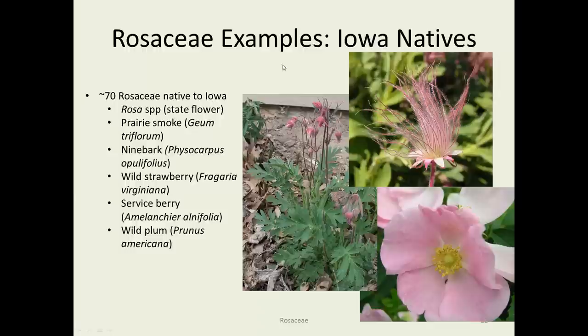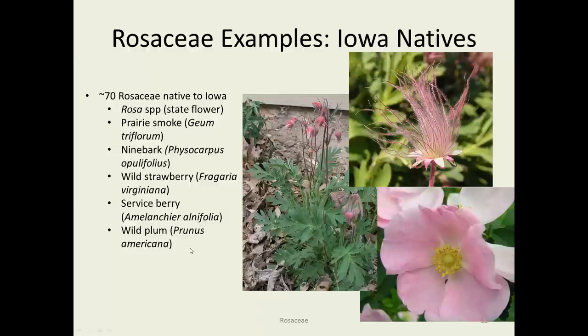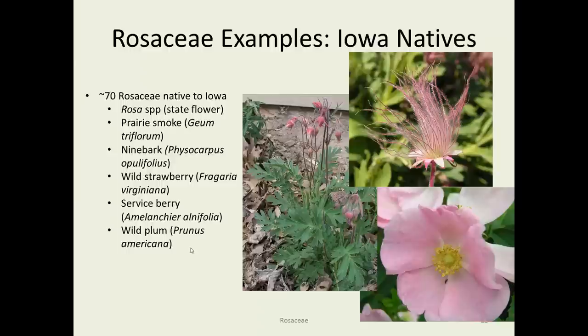Iowa natives of the Rosaceae: one of the most lovely little prairie plants is called Prairie Smoke, Geum triflorum. The upper right shows the finished flower and the left shows the flowers still in bud. They're a prairie species, quite short — only a foot tall or so. Ninebark is another Iowa native used both naturally and in horticultural settings. Wild strawberry (Fragaria) is native to Iowa. Service berry is a very common understory tree in Iowa woodlands. Wild plums are extremely common in Iowa and grow quite thickly. Our state flower is the wild rose, and we have three or four rose species growing in Iowa.